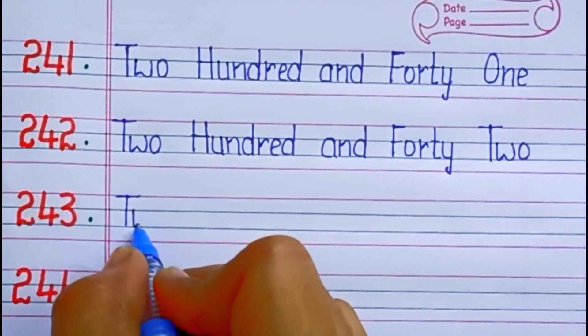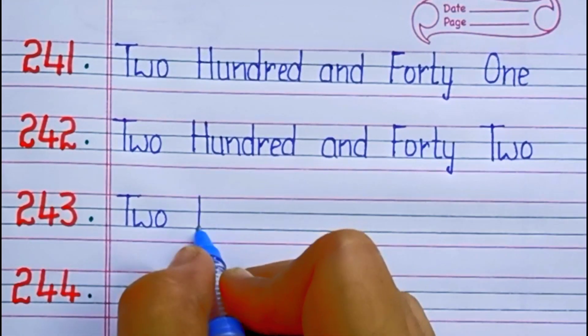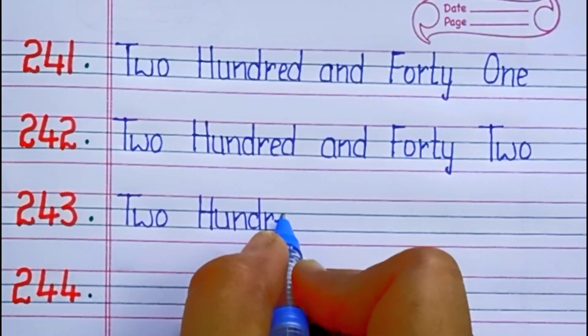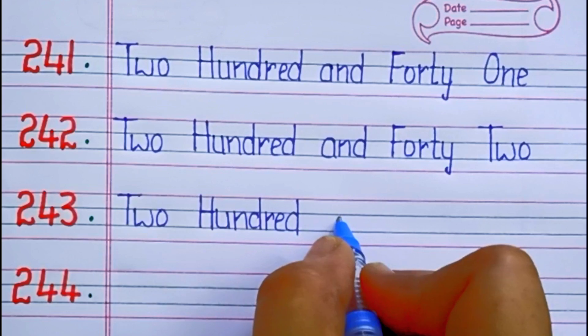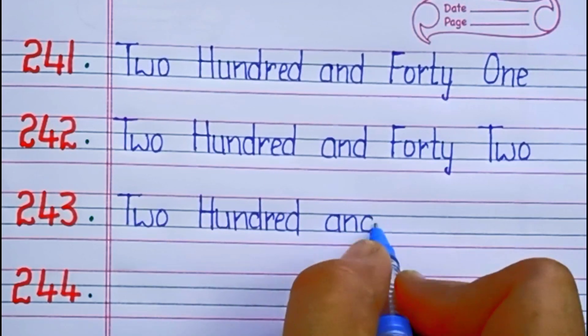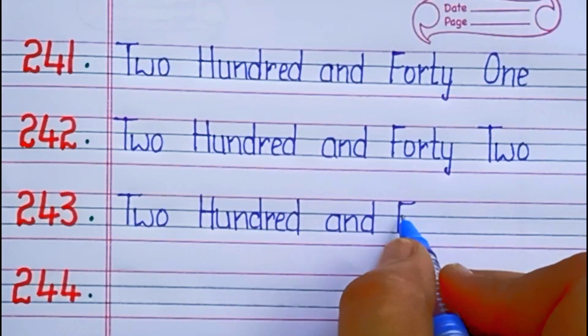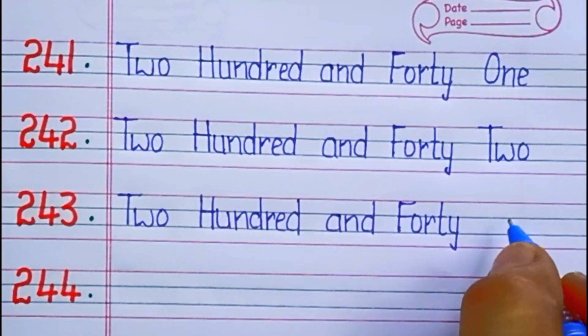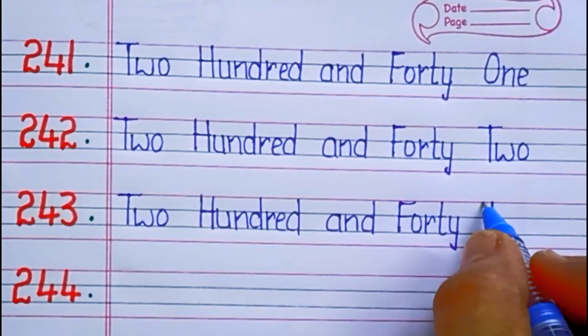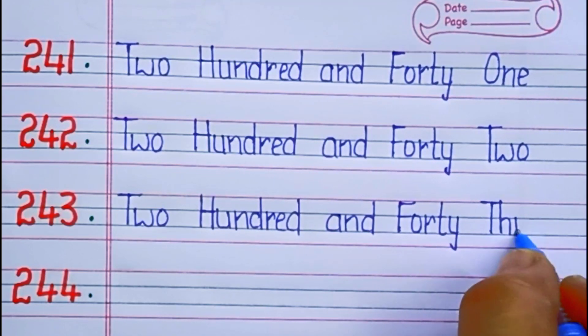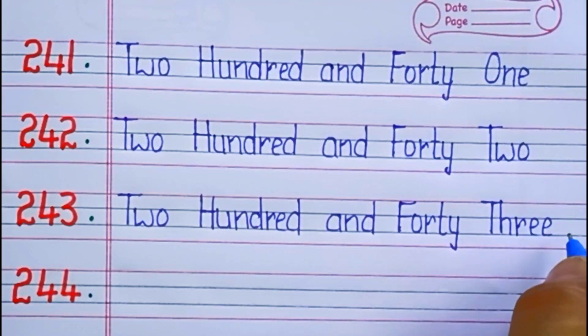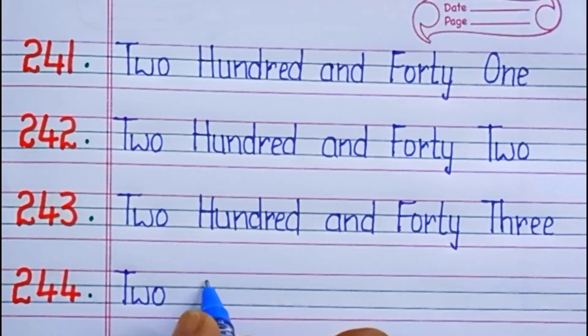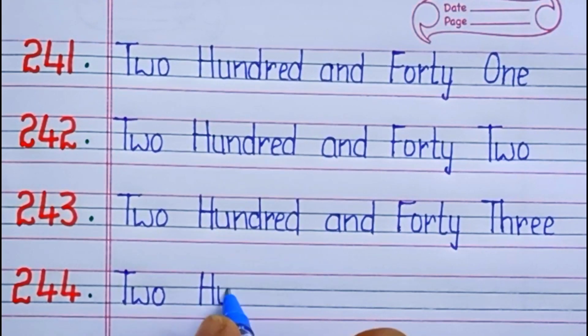243. Two hundred forty-three: F-O-R-T-Y, 43. T-H-R-E-E, 3. Forty-three. 243.